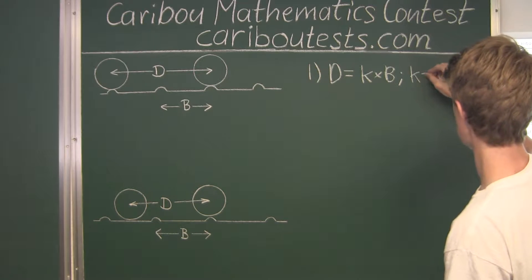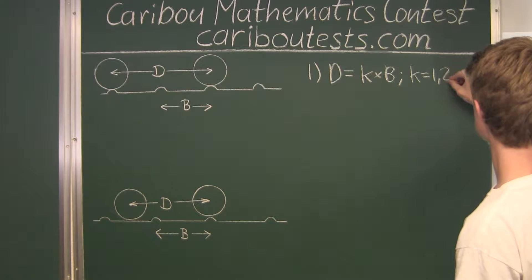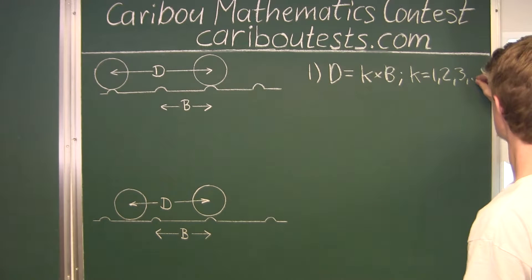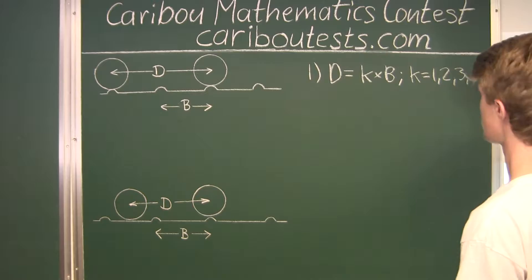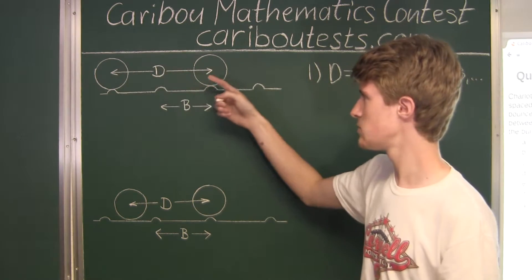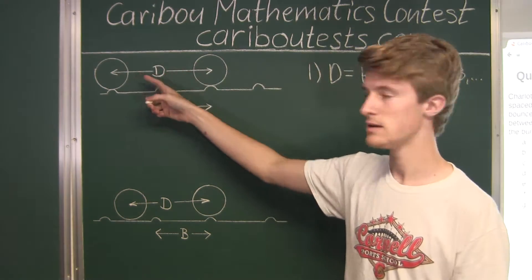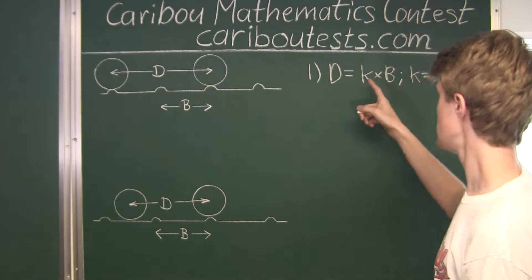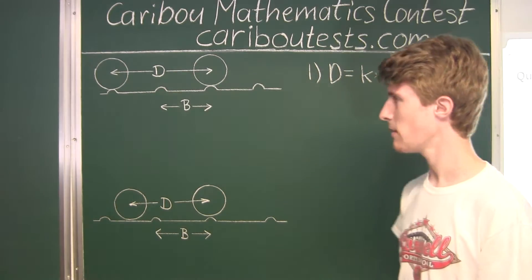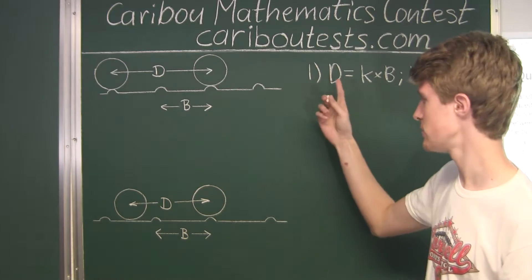So K is equal to 1, 2, 3, and so on. Just to show this, we would have D equals K equals 2 times B, for example. Alright, so that was for the first case.